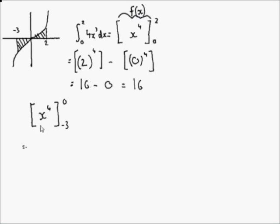The area here will equal f of 0 minus f of minus 3. So basically what we've done here, that's just f of 2 minus f of 0. Here it's f of 0 minus f of minus 3. So we've got 0 to the power of 4 minus minus 3 to the power of 4.